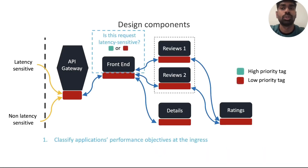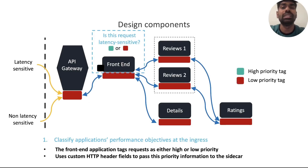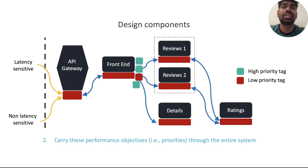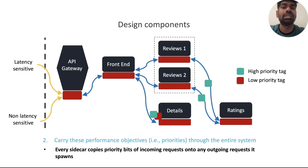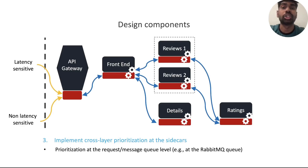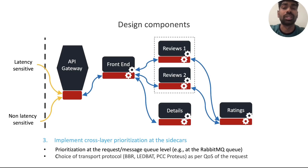Our design involves three components. First, we classify an application's performance objectives right at the ingress — for prioritization, this means the front-end application tags requests as either high or low priority, using custom HTTP headers to pass the priority information to the sidecar. Next, to carry out these priorities through the entire system, every sidecar copies priority bits of its incoming requests onto any outgoing requests it spawns. Finally, to implement cross-layer prioritization, many options are now available — for example, one could prioritize requests at the message queue level or at the transport level, opening multiple parallel transport connections running different protocols and choosing the right connection based on the QoS of the request.